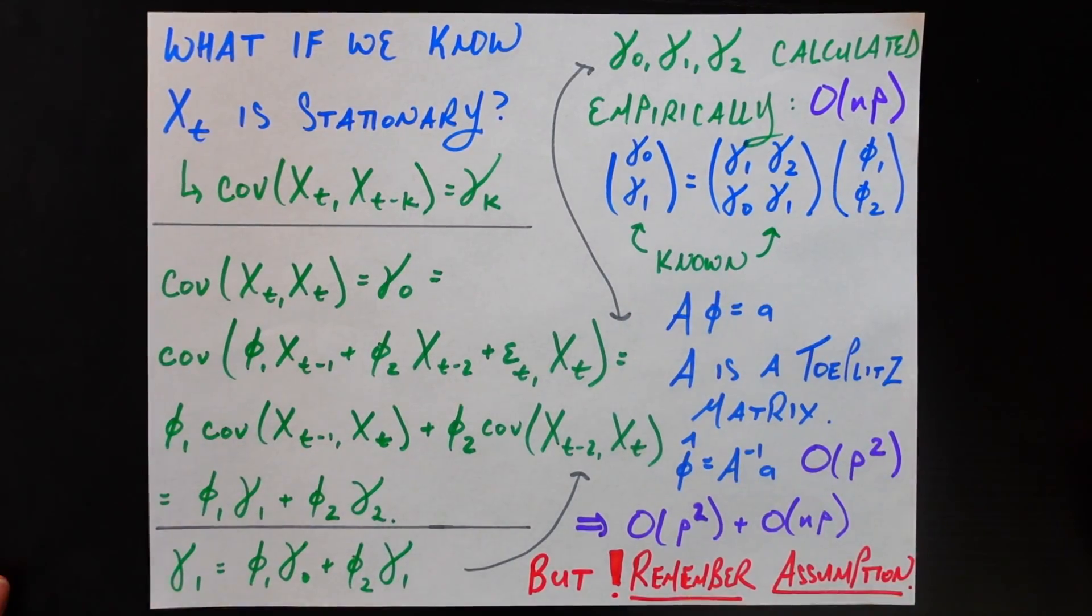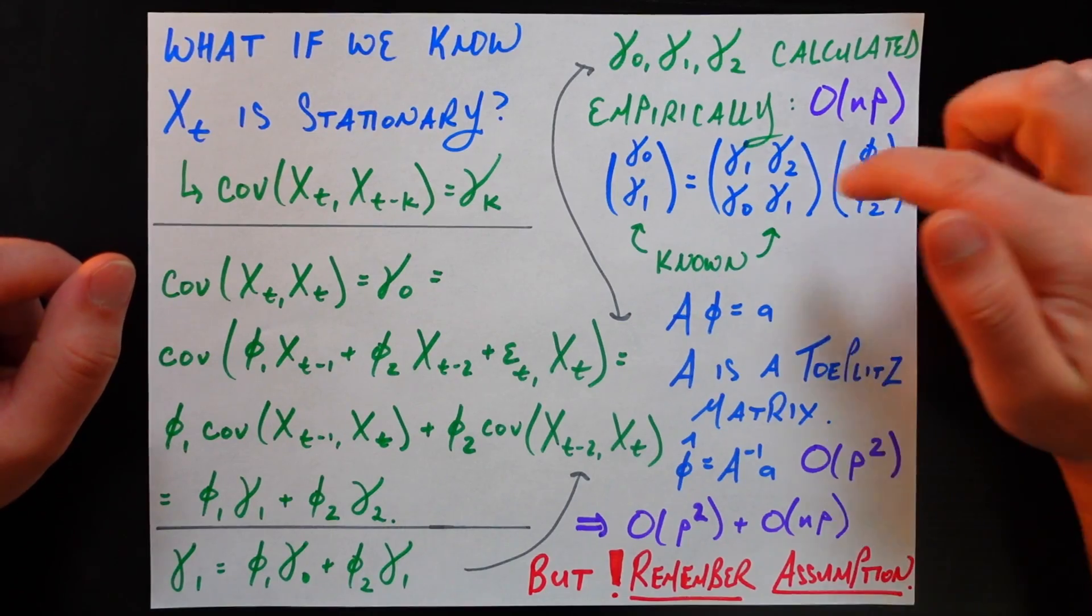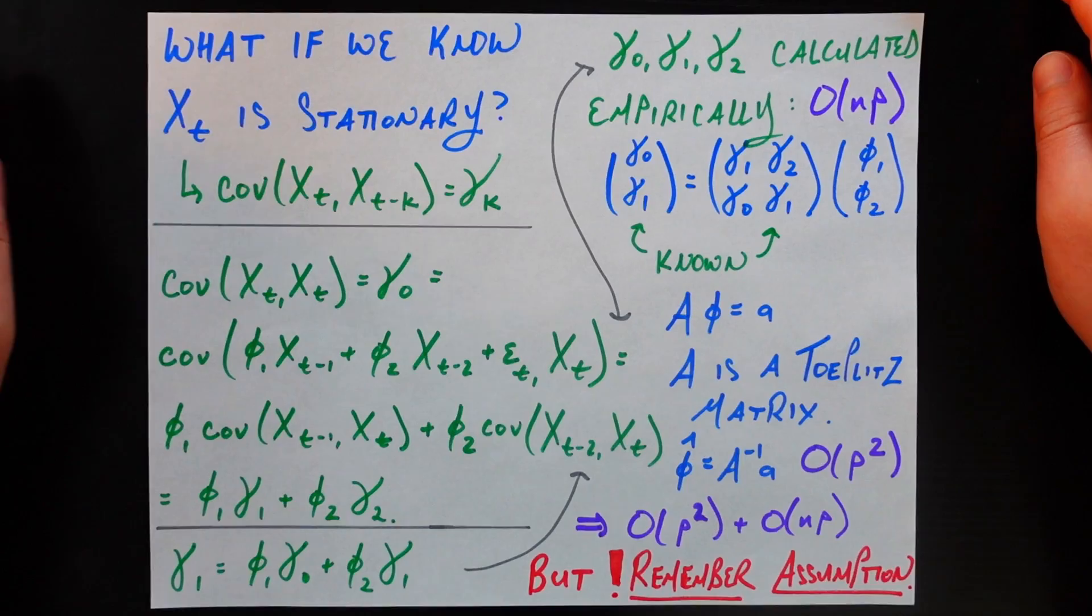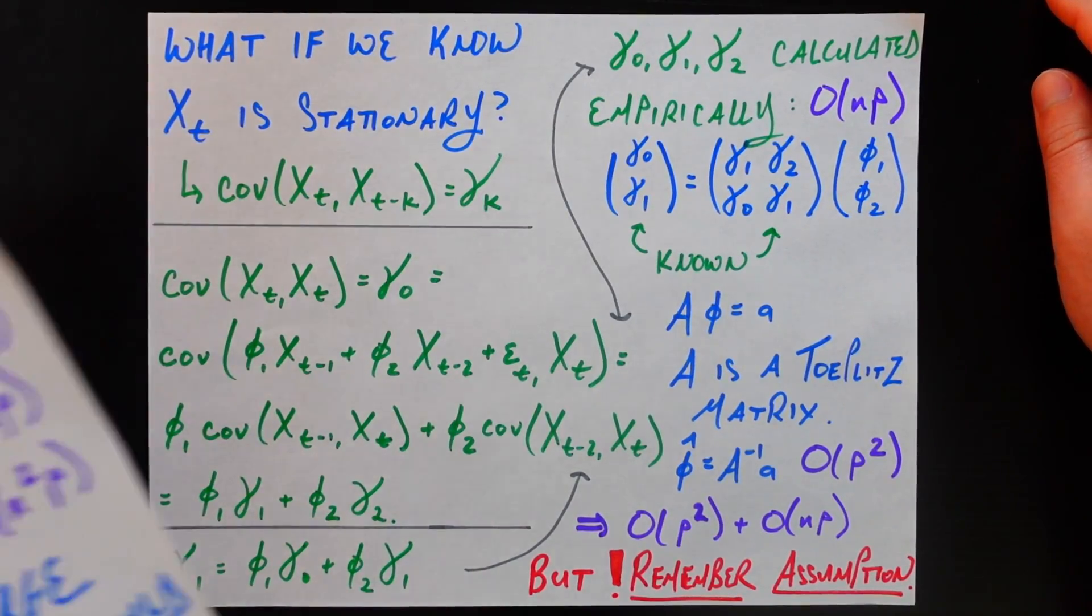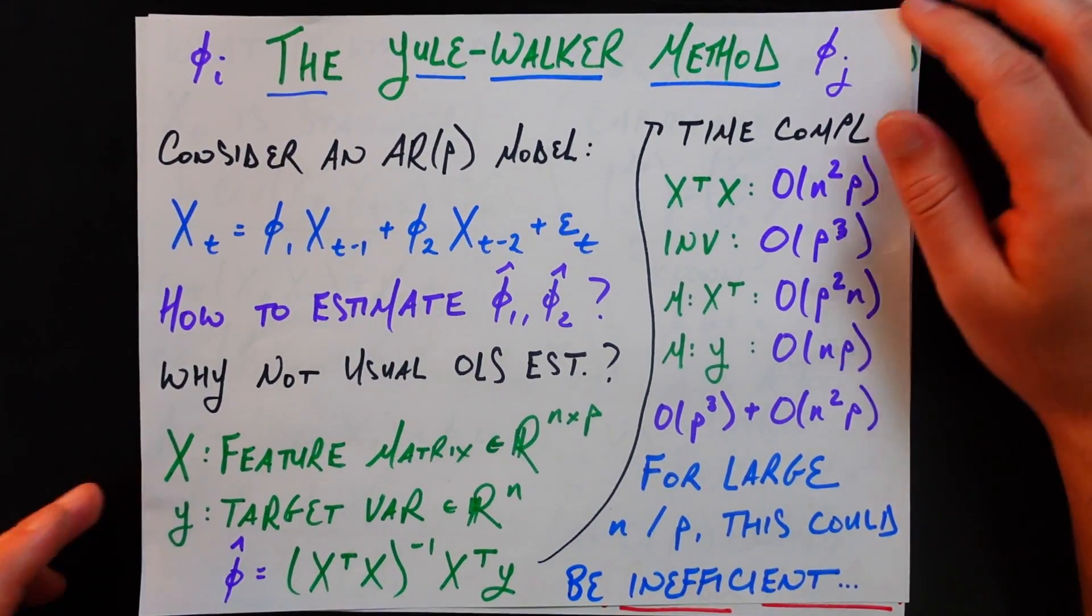So hopefully that helped to understand the Yule-Walker equations, and yes we did this for an AR(2) process, but you can just extend all of this math to a general AR(P) process, you'll find that this big A matrix is still Toeplitz, and everything will still work as expected. So hopefully you enjoyed that video, please like and subscribe for more videos just like this. Have a great rest of your day, and I'll see all you wonderful people next time.